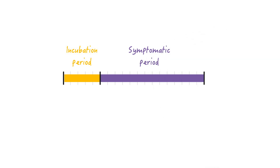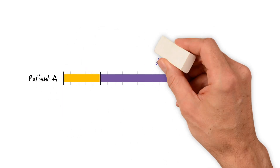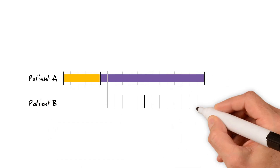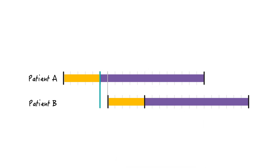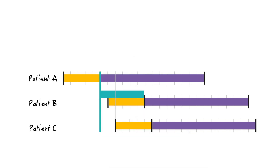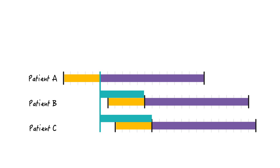Let's look at a couple of examples to understand what they did. Let's say the incubation period was always 5 days followed by a symptomatic period. In a disease where patients only become infectious after they develop symptoms, as was the case in SARS or Ebola, the serial interval is the duration from symptom onset in the infector to symptom onset in the infectee. We can see that in these patients, the serial interval is longer than the incubation period.